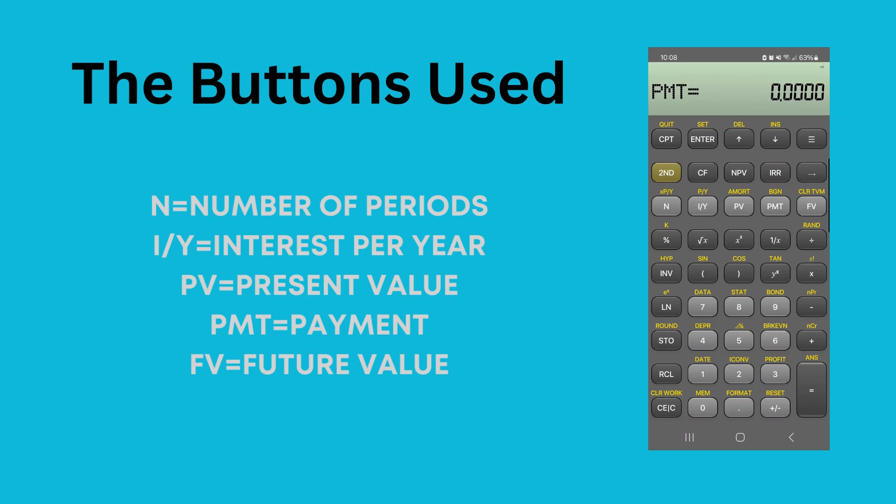What each of those buttons means are the following. N stands for number of periods. This could be number of months or it could be number of years. IY is interest per year. PV is present value. PMT is payment. And FV means future value.